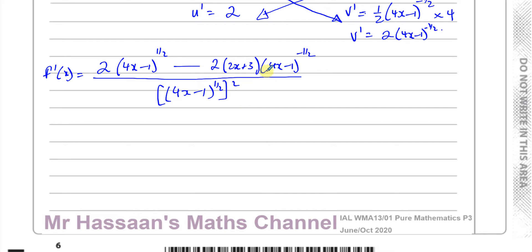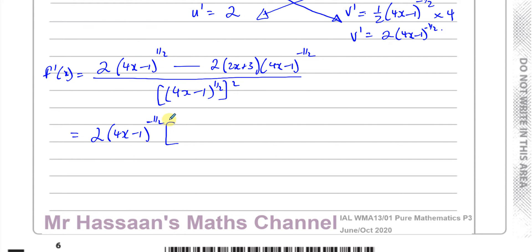To simplify, take out the common factor in the numerator. There is a common factor of 2 and also of 4x minus 1, but at two different powers. When you have the same term at two different powers, take out the lowest power as the common factor — so take out 4x minus 1 to the power of negative a half. Then inside the bracket: to go from negative a half to positive a half you multiply by 4x minus 1 to the power of 1, giving the first term. This term multiplied by that term gives the original first term.